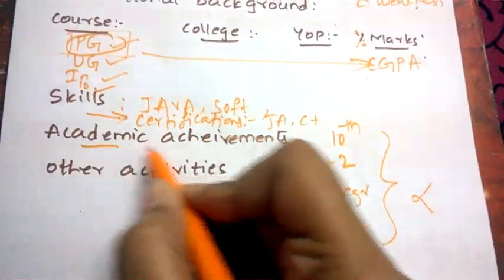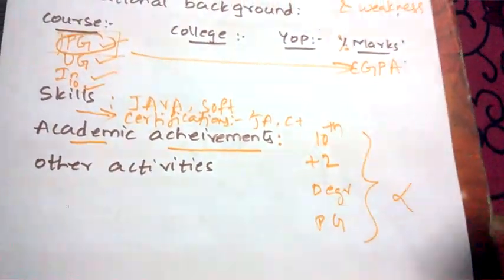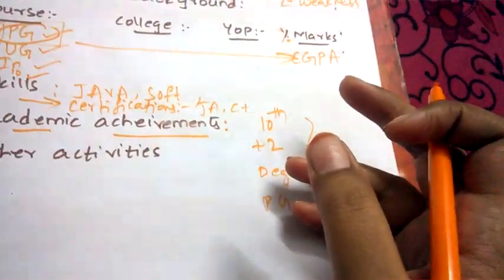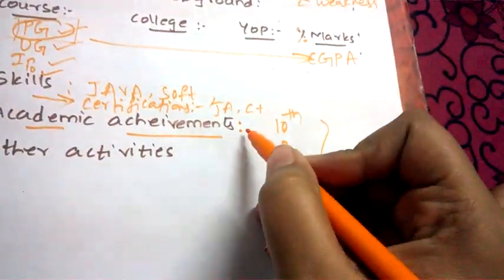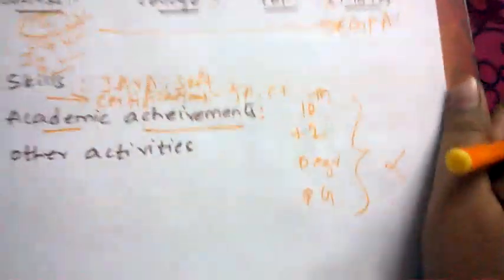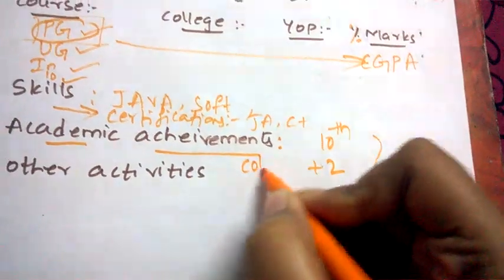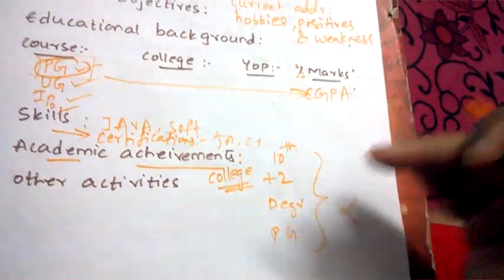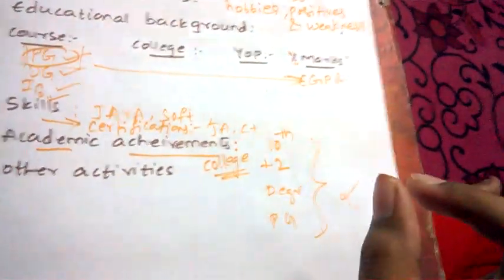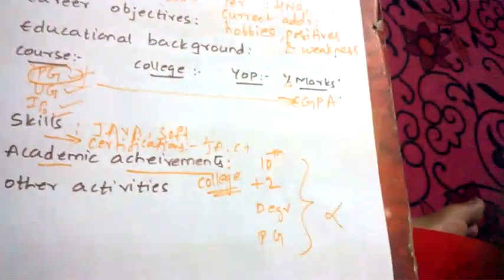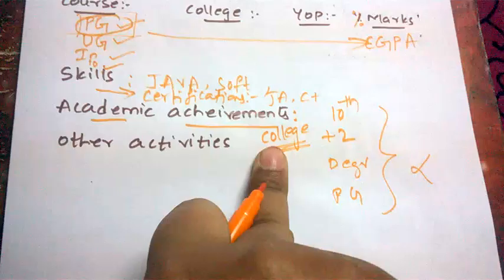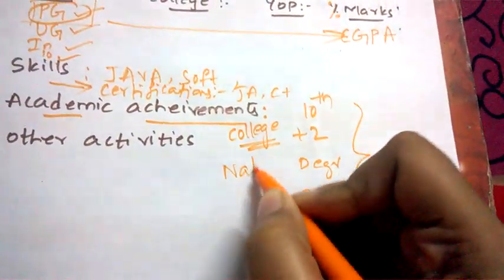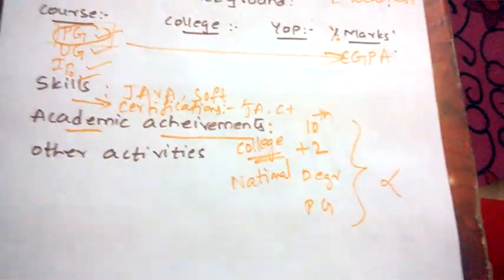Next are academic achievements. A common mistake is mentioning school-level achievements like winning prizes or singing in a school competition. Never mention those. Academic achievements should only include college-level achievements. If you participated in any national or international level competition, won gold medals or prizes, mention those.